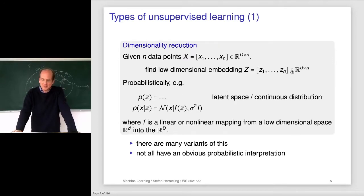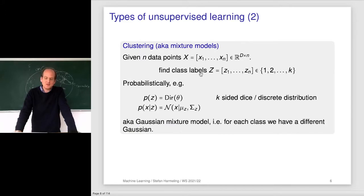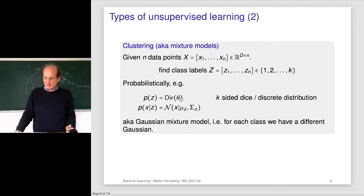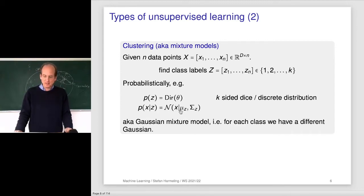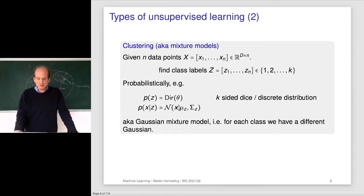The other option is to find class variables Z1 to Zn which come from a discrete set — this is called clustering, or fitting a mixture model. Probabilistically, P(Z) is now a discrete variable distributed according to, say, a Dirichlet distribution, or any distribution over a finite set of integers. Given such an artificial class label, I can have a simple distribution like a Gaussian, where the mean and covariance depend on the class assignment. This is called a Gaussian mixture model: for every class we have a different Gaussian.